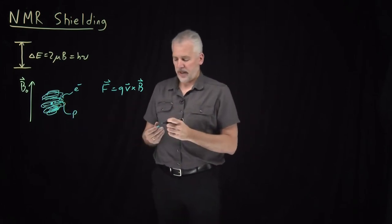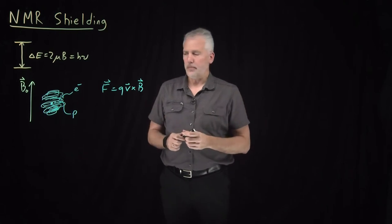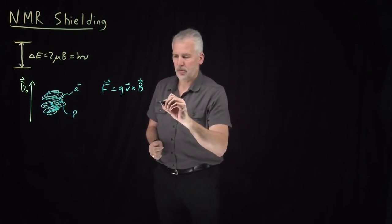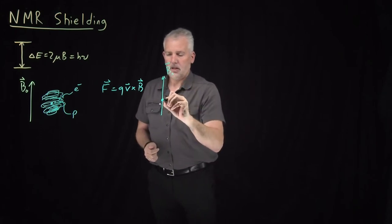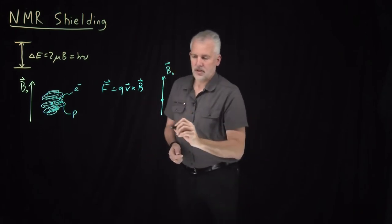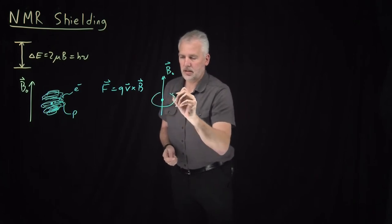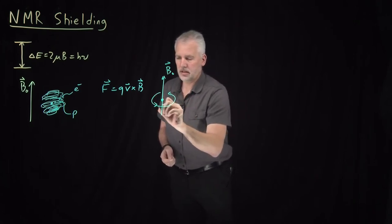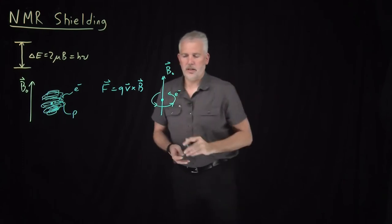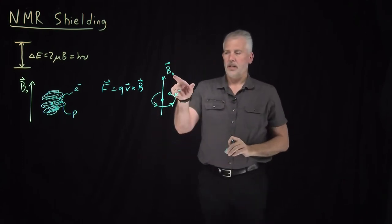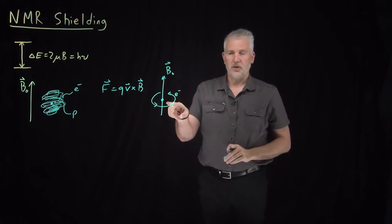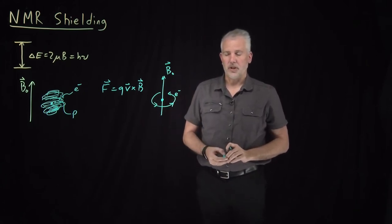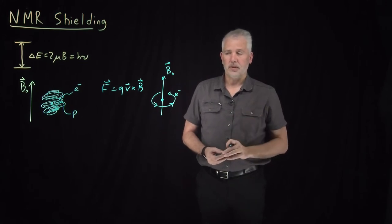You can use the right-hand rule to determine how that force behaves. I won't use the right-hand rule here because my right and left get mirrored, so that would confuse things more than it would help. But if there's a nucleus, there's an electron in the vicinity of that nucleus, the magnetic field is going to cause that electron to circulate in a circular motion around the nucleus.